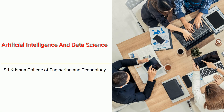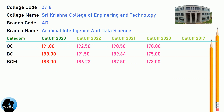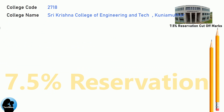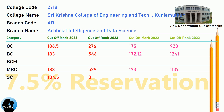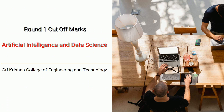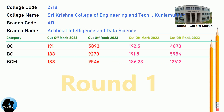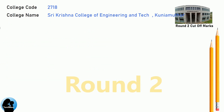DNEA Cut-Off for Shri Krishna College of Engineering and Technology in Artificial Intelligence and Data Science. DNEA 7.5 Reservation Cut-Off. DNEA Round 1 Cut-Off. DNEA Round 2 Cut-Off for Shri Krishna College of Engineering and Technology in Artificial Intelligence and Data Science.